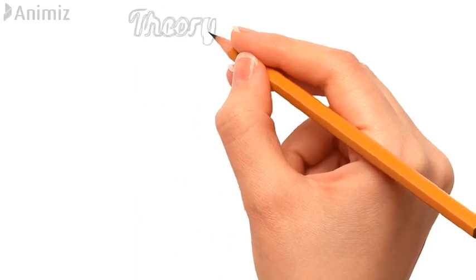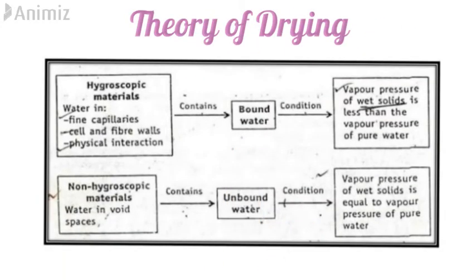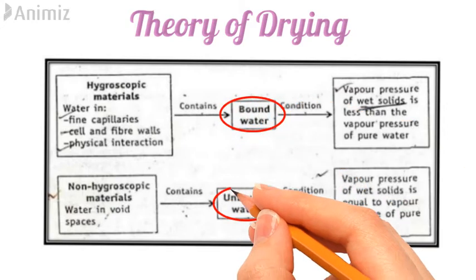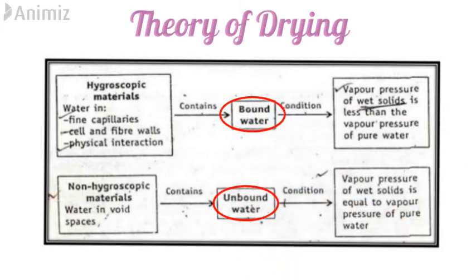Now let's understand some theories of drying. In any material to be dried, there are two types of water present: bound water and unbound water. Bound water is present in hygroscopic materials — water is present in fine capillaries, cell and fiber walls, and there is a physical interaction between the material and the water. Unbound water is present in the void spaces of non-hygroscopic materials. In bound water, the vapour pressure of the wet solid is less than that of pure water, whereas in unbound water the vapour pressure of the wet solid is equal to the vapour pressure of pure water.